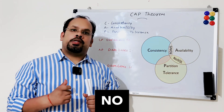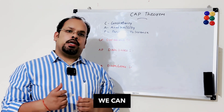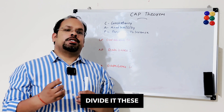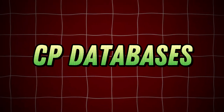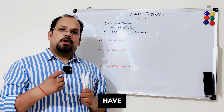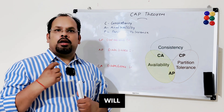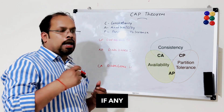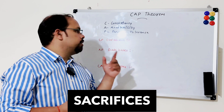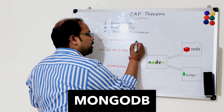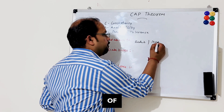So with CAP theorem, NoSQL databases are closely linked. As per CAP theorem, we can divide these databases into three categories. The first is CP databases — here we have consistency and partition tolerance, but availability will be sacrificed. That means if any partition happens, availability is sacrificed. Redis and MongoDB are examples of this type of database.